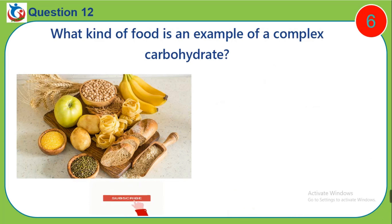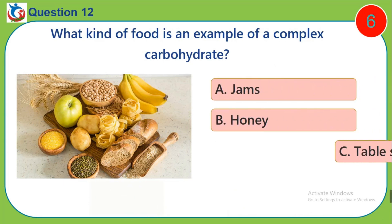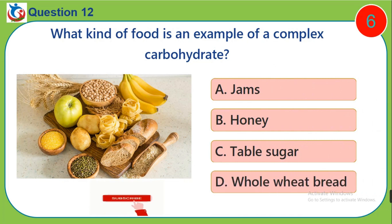Question 12. What kind of food is an example of a complex carbohydrate? A. Germs. B. Honey. C. Table sugar. D. Whole wheat bread.